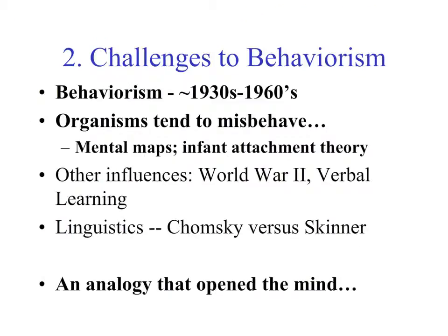One major school of psychology that has had a direct and indirect impact on cognitive psychology is behaviorism. Folks like Pavlov, Skinner, Watson, and several others contributed to its development before the 1930s through the 1960s. But there were several challenges raised about behaviorism. The first is that organisms — humans, rats, other animals — tended to misbehave. They didn't behave the way behaviorists thought they should. Examples include cognitive maps with rats and infant detachment theory. There are also practical examples from World War II, where behaviorist predictions began to break down in practice.